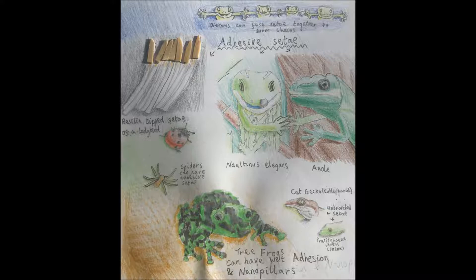Setae in anoles, Presenohemovirense, and geckos have been described as having triangular endings. Although geckos in the family Eublepharidae lack adhesive pads, climbing Eublepharids can have short and branched setae, like in cat geckos' feet and tail.